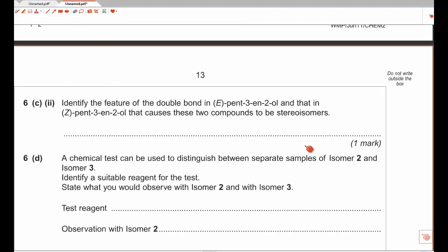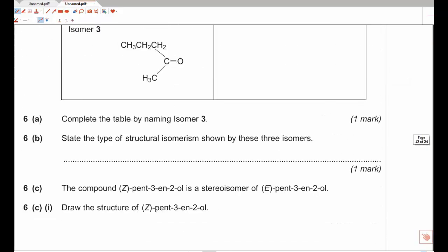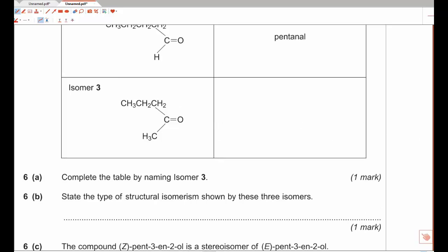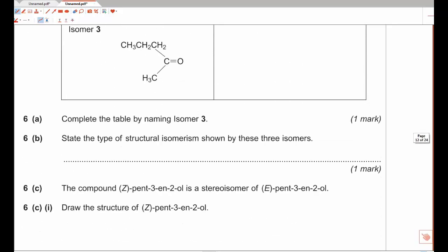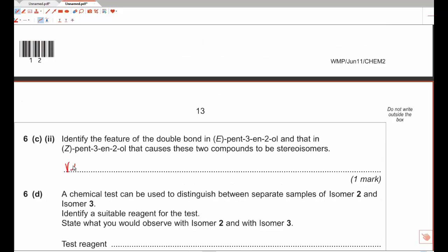The last question: identify the feature of the double bond in E-pent-3-en-2-ol that causes these two compounds to be stereoisomers. We know we've got E and Z, so it looks like a long molecule. All we're talking about here is restricted rotation. Restricted rotation around the double bond. One mark. Easy money.